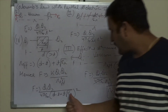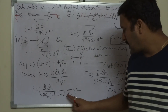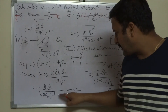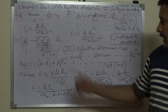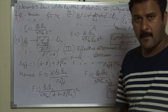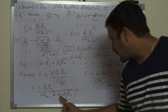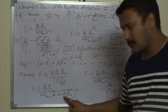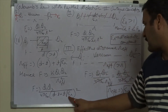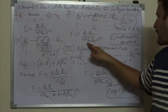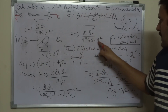Verification: If the medium is vacuum, εᵣ = 1 and √1 = 1, so R_effective = (d − t) + t = d, giving force = Q₁Q₂/(4πε₀d²), which is correct. If the medium completely fills the gap, then t = d, so R_effective = d√εᵣ, giving force = Q₁Q₂/(4πε₀d²εᵣ), which matches the known result for a fully filled dielectric. Both limiting cases are verified.